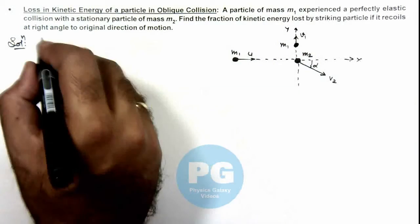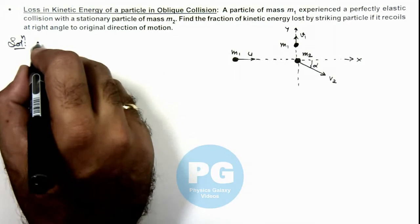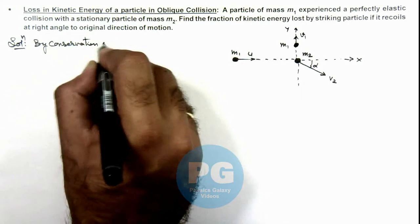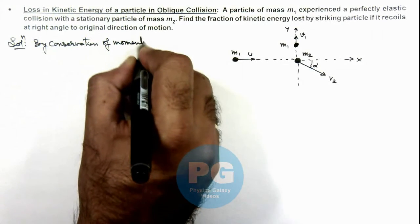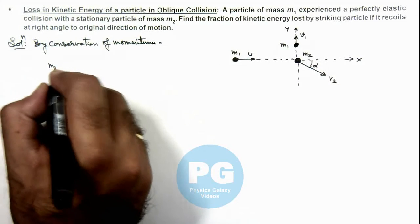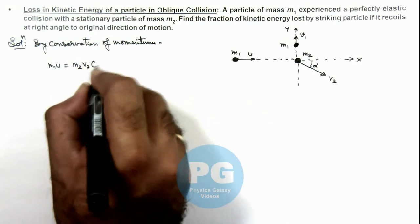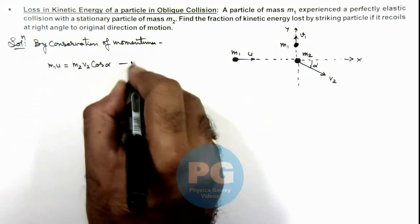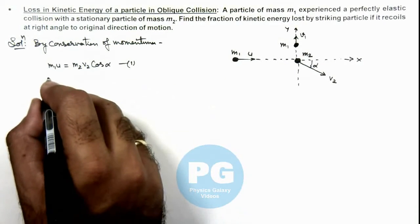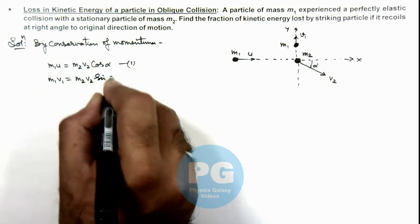As the collision is elastic, we can conserve momentum and energy. By conservation of momentum, in the x direction the initial momentum was m1*u and after collision the momentum is m2*v2*cos(alpha), which is Equation 1. And in the y direction, as there is no initial momentum, the final momentum should be zero. So m1*v1 = m2*v2*sin(alpha), this is Equation 2.